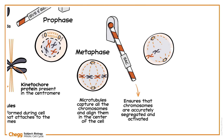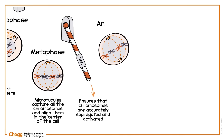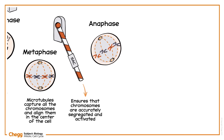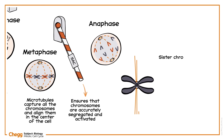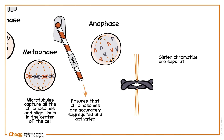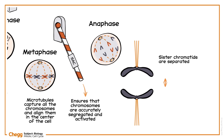Next, the cell enters anaphase, where the centromere of each chromosome divides transversely so that each half chromosome has its centromere. Now the sister chromatids are separated from each other and moving towards opposite ends of the pole.